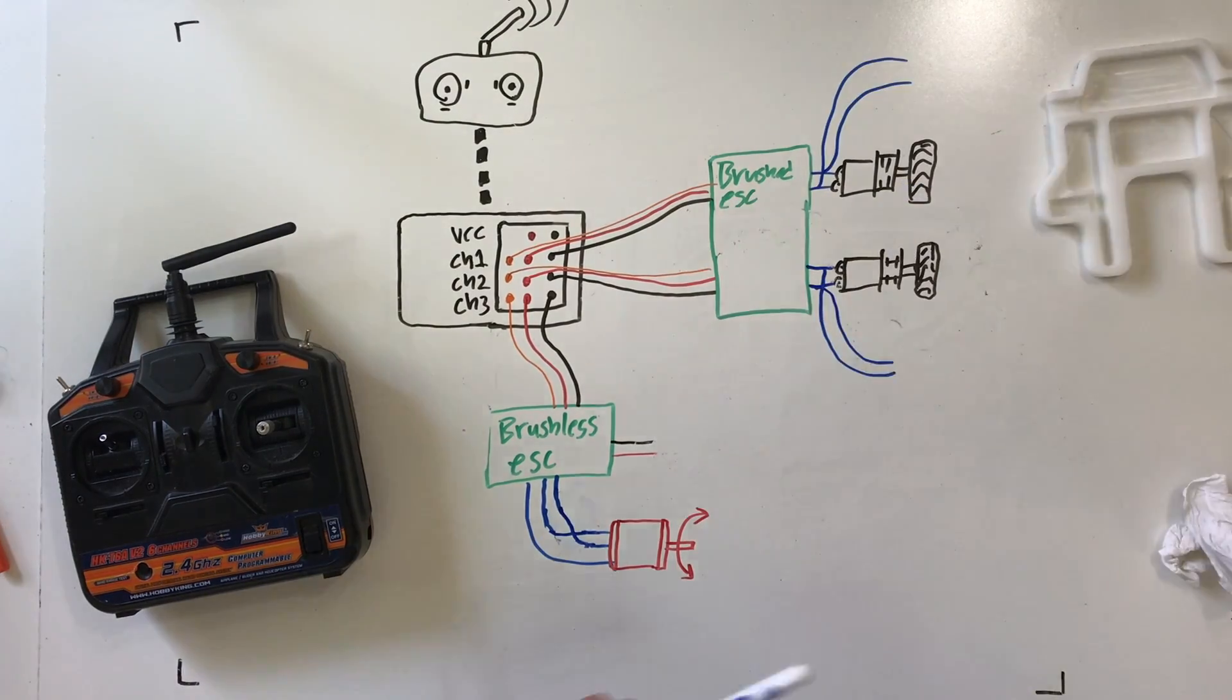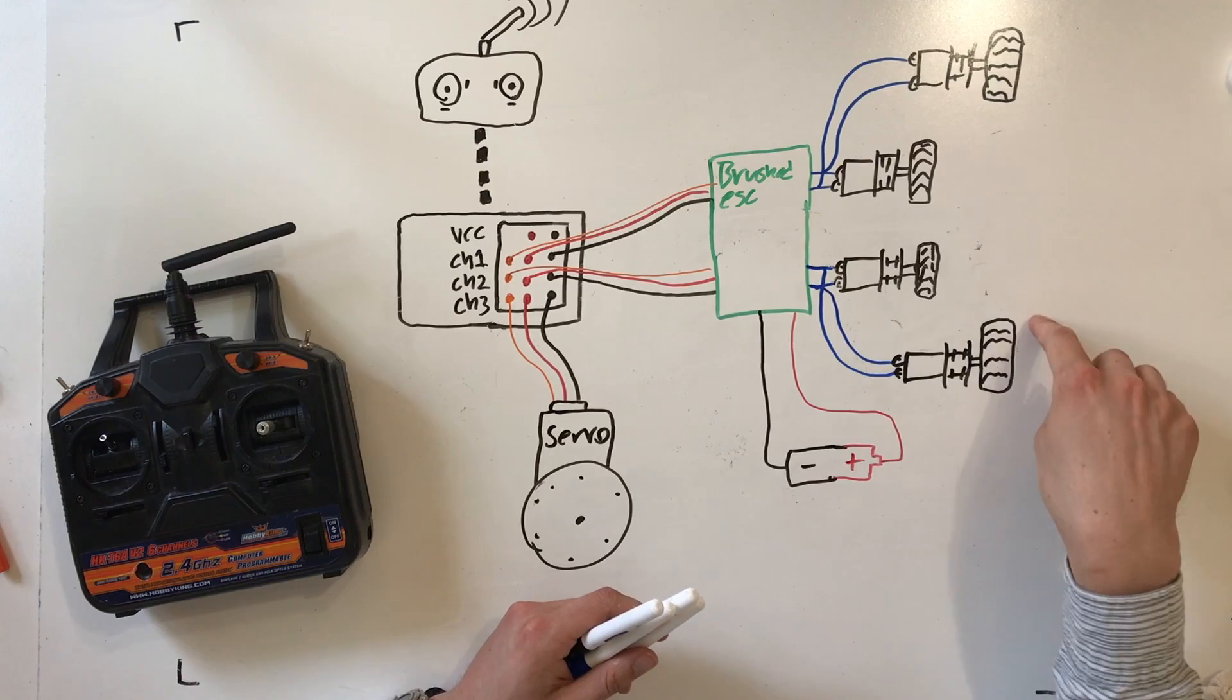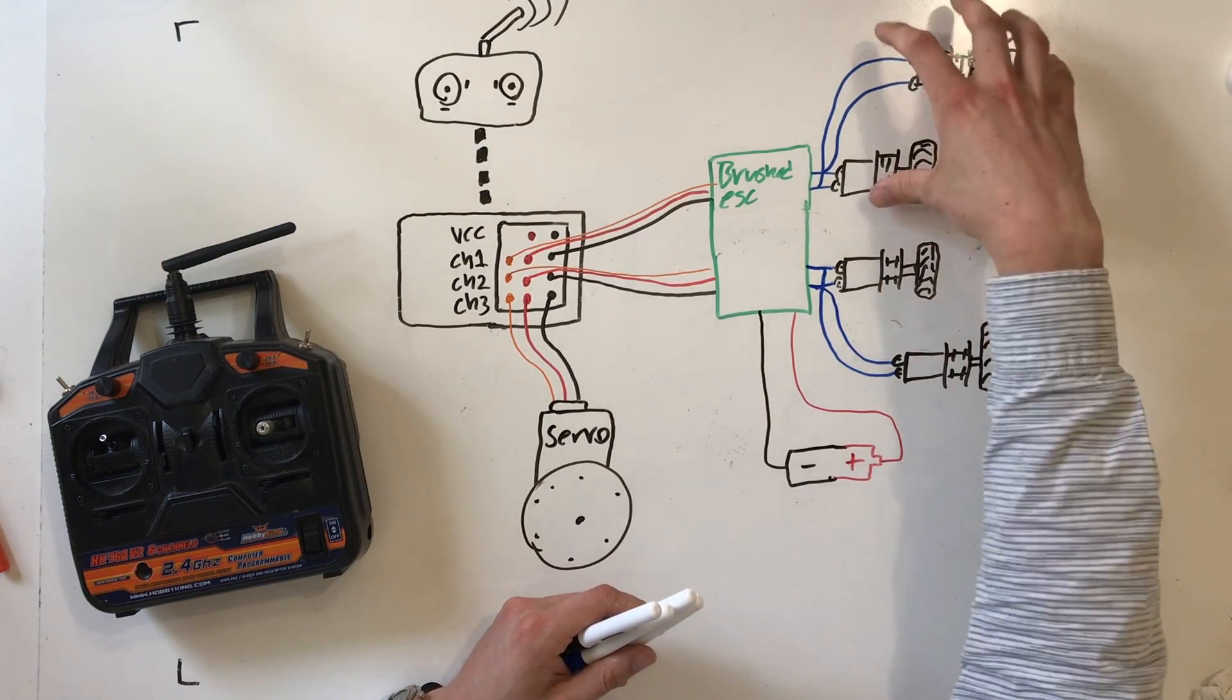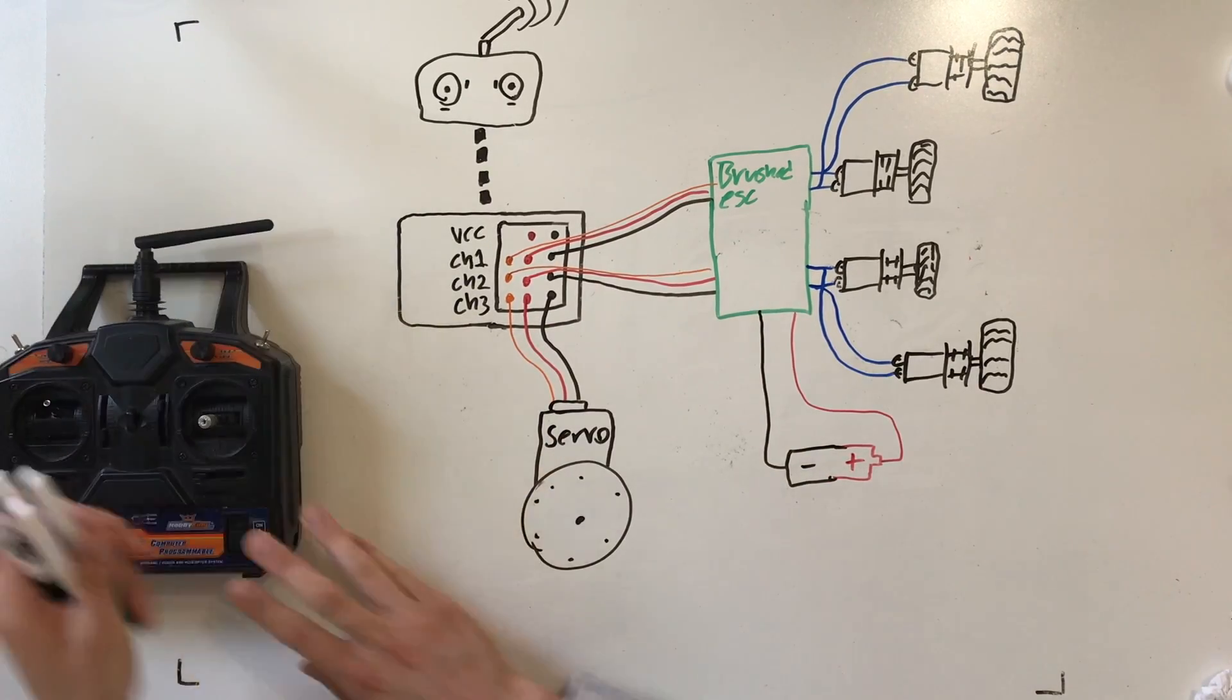Next up is the wiring diagram for the Crave Monster. So this uses a dual motor ESC for the drive. There are two motors for the left side, two motors for the right side drive. And then there's a servo on channel 3 for the mouth.